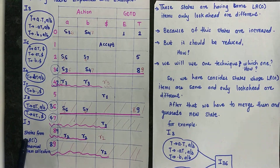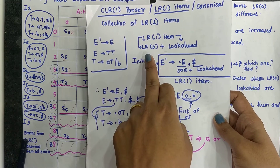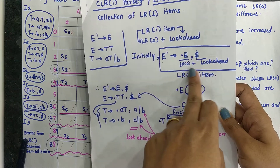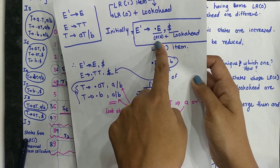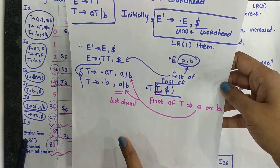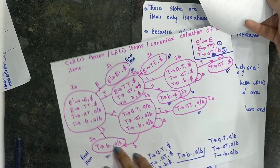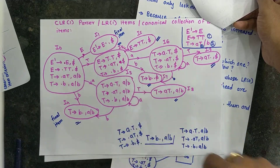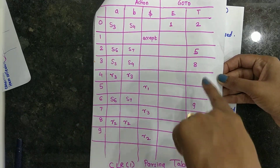If you remember that example, I can show you here again. This is the previous video where we learned the CLR1 parser, LR1 items, and canonical collection of LR1 items. LR1 items are LR0 plus lookahead — meaning, in the production rule, a dot is present on the right-hand side, and the extra symbols are the lookahead symbols. These are your canonical LR1 items, and we constructed a state transition diagram and CLR1 parsing table in the previous video.